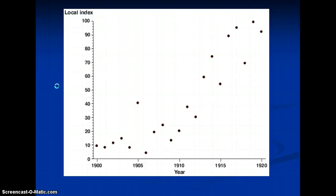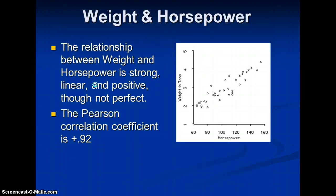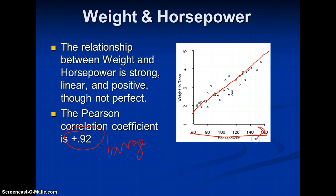There are all sorts of data we can look at. Weight and horsepower is an example used a lot — especially for engineering or mechanical engineering backgrounds. The relationship between weight and horsepower of an engine is strong, linear, and positive, but not perfect since all points don't line up on an exact line. The Pearson correlation coefficient is positive 0.92 — very large. The greater the horsepower, the heavier the engine.